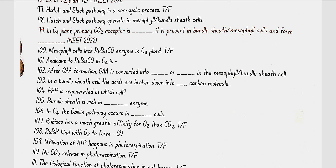In the bundle sheath cell, the 4-carbon acids are broken down into CO2 and a 3-carbon molecule. PEP is regenerated in the mesophyll cell. Bundle sheath cells are rich in RUBISCO enzyme. In C4, the Calvin pathway occurs in bundle sheath cells.